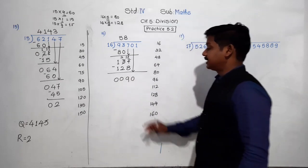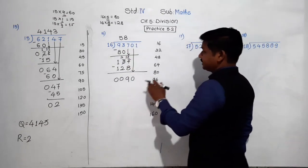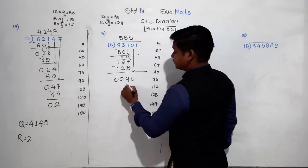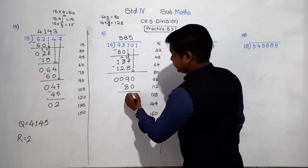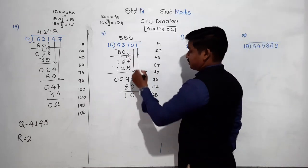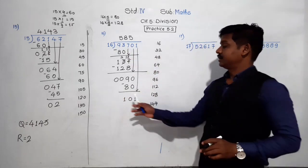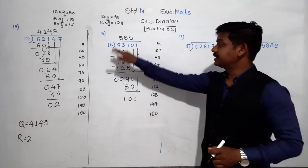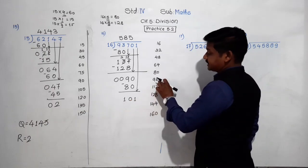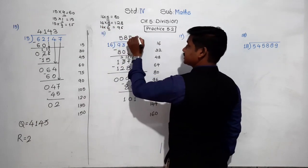Bring the next digit 0 down — the number becomes 90. Divide 90 by 16. 90 is not in the table of 16. The smaller number than 90 is 80. 16 fives are 80. 90 minus 80 is 10. Bring the next digit 1 down — the number becomes 101. 101 is not in the table of 16. The smaller number than 101 is 96. 16 sixes are 96. So 6 goes in the quotient.